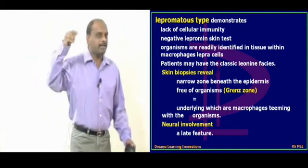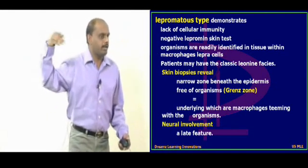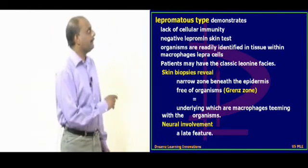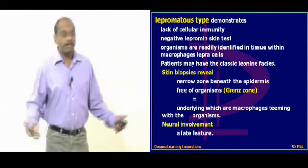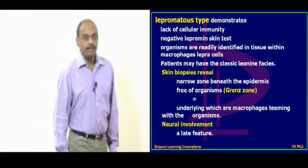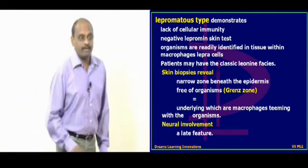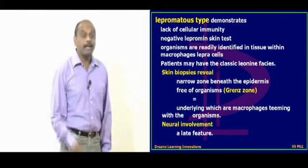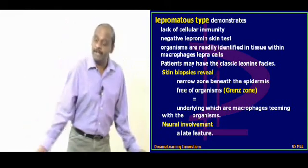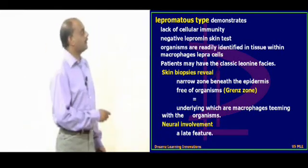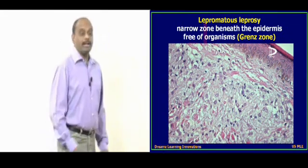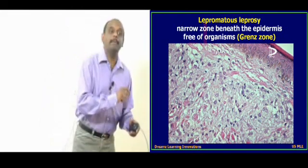The lepromatous spectrum develops when cellular immunity is weakened and no longer functional — it cannot contain the disease. At that stage, lepromatous leprosy develops. Because there is no cell-mediated immunity, the lepromin test will be negative. Within tissues, mycobacteria reside inside macrophages; macrophages in which Mycobacterium leprae are found are called leprosy cells. Typically the classic leonine facies will be developing.